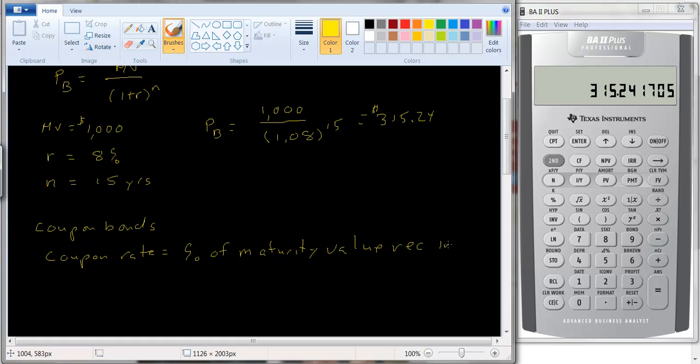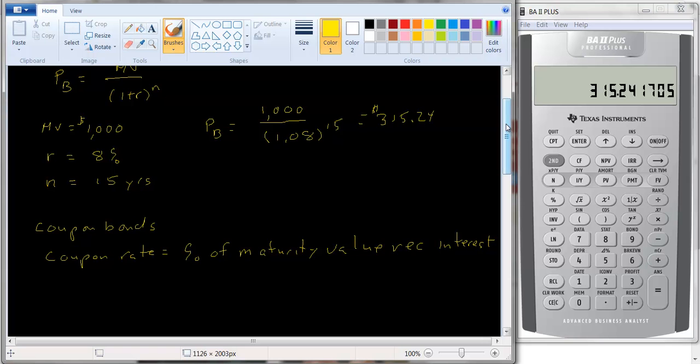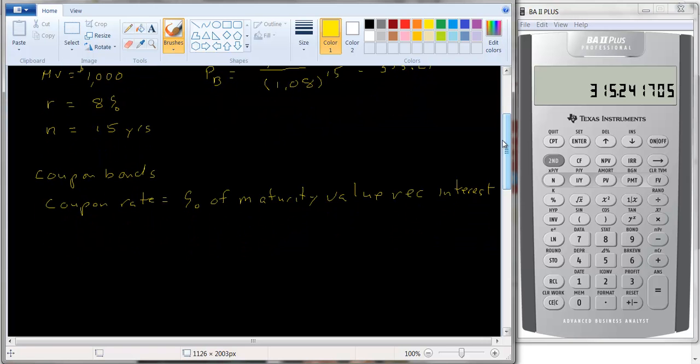And that interest is received each year. Now again, most bonds pay interest semi-annually. So if we figure out that you would receive $100 a year, that would be $50 every six months. And then, again, it's just a present value problem. So again, let's say the maturity value is 1,000.